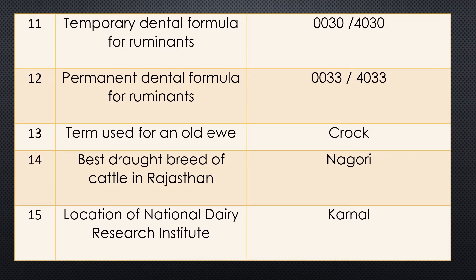Question eleven: Temporary dental formula for ruminants. This is an important and easy-to-remember question. Upper jaw: 0, 0, 3, 0. Lower jaw: 4, 0, 3, 0. This is useful for determining the age of the animal.